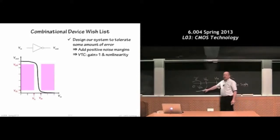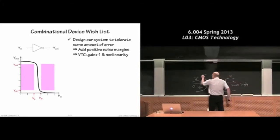These were the range of voltages considered inputs. The difference between what I have to output when sending information to you and what you accept as inputs is called the noise margin.